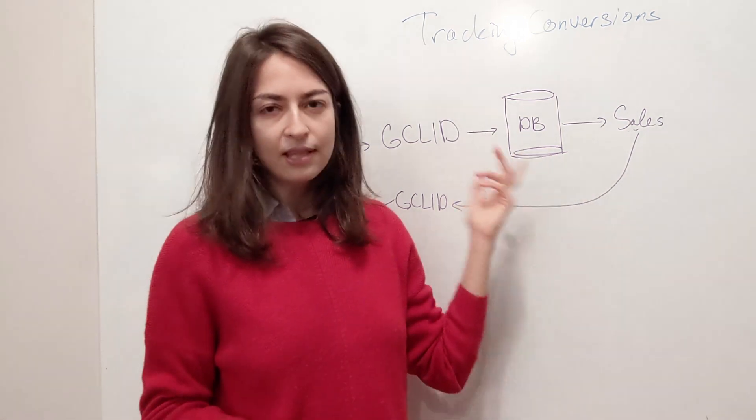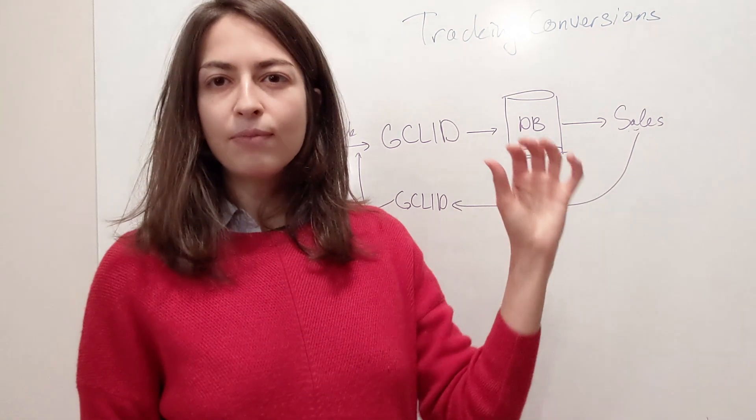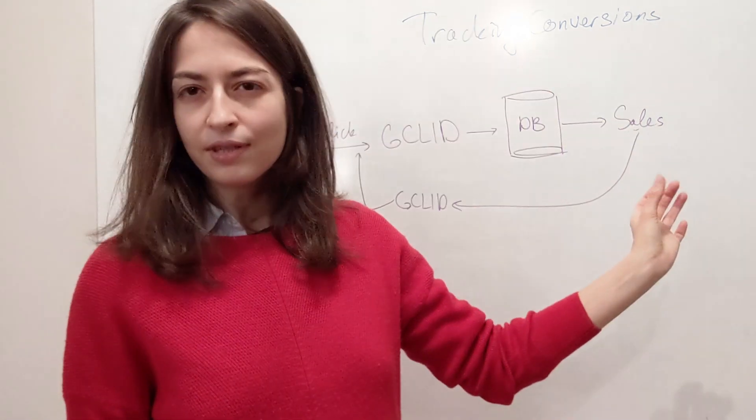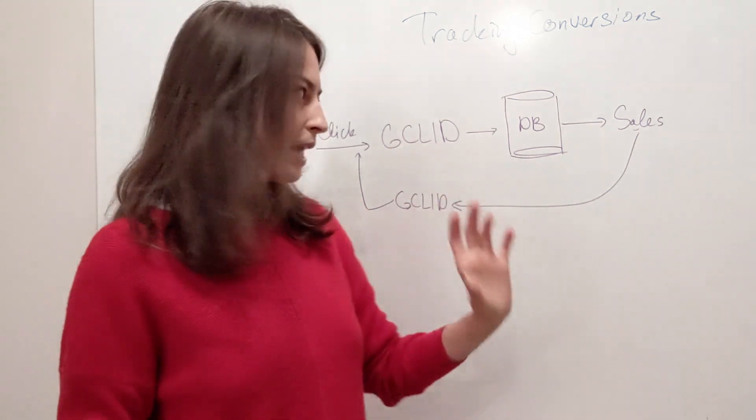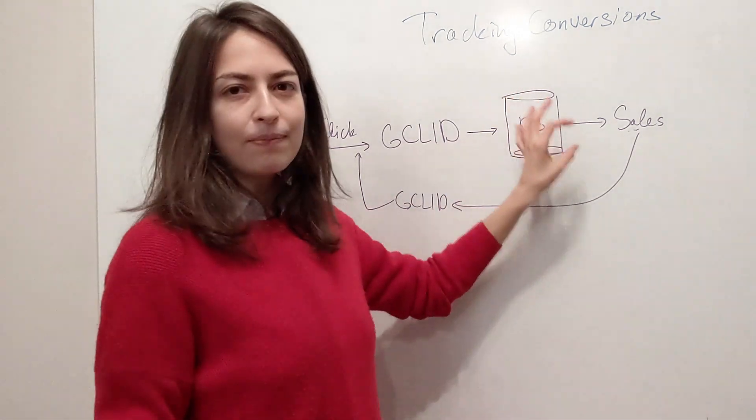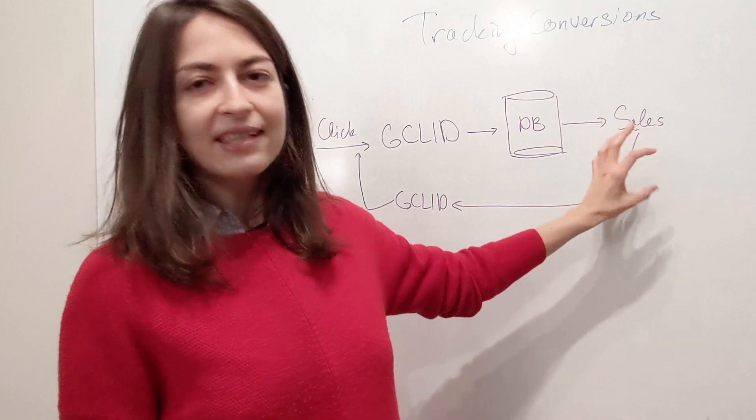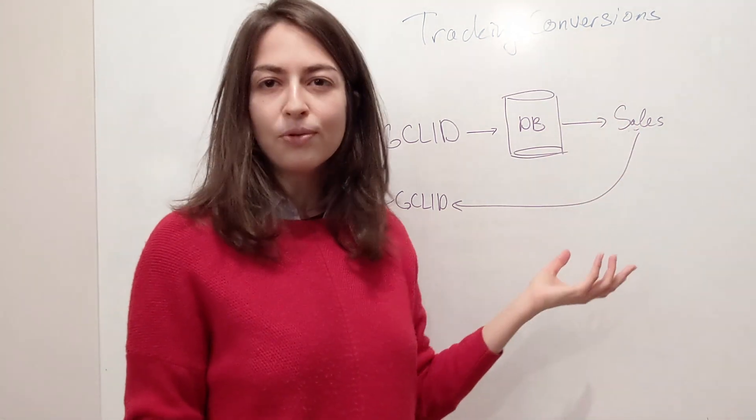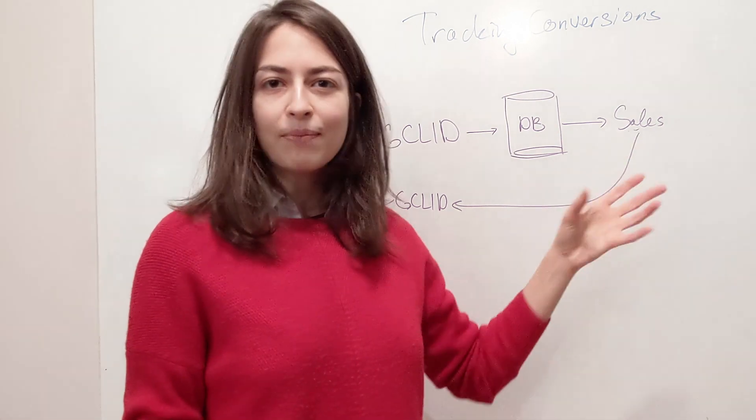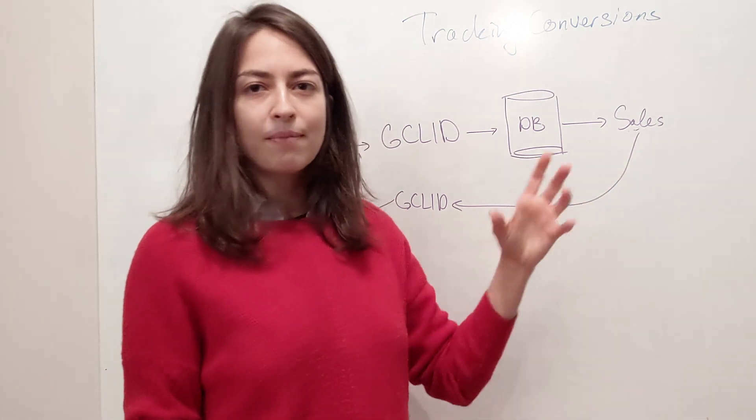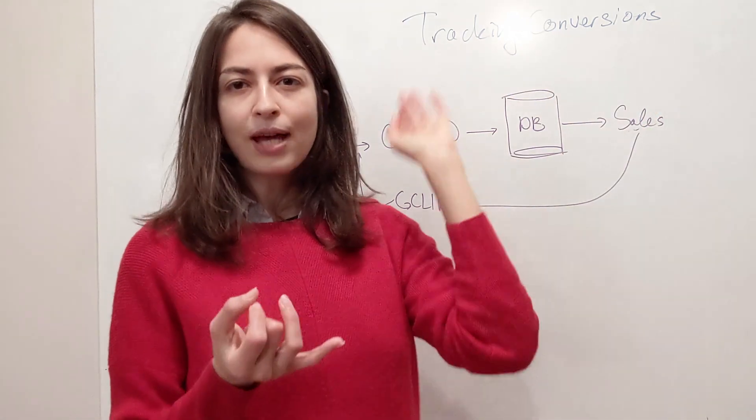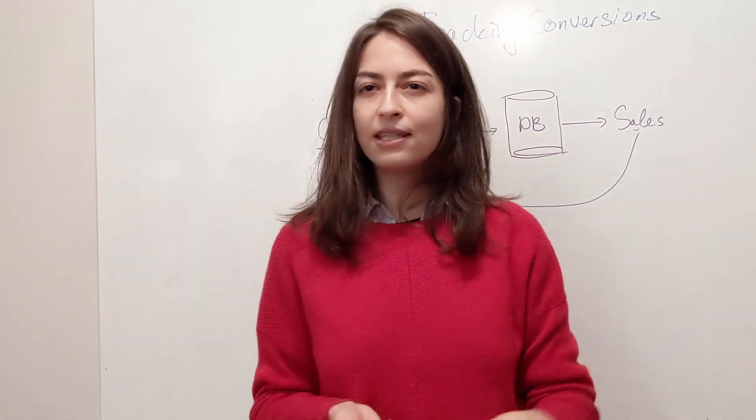Then what happens is from your database, let's say the sales team access these leads, they call them, they speak with them, they do what they do. And some of them convert, some of them don't, some of them buy. So you have all these data, you have the name, you have the email, the phone number and the GCLID. And now you know the status, whether they are interested, highly interested, bought already in the progress of buying.